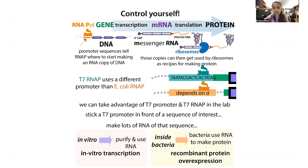T7 RNA polymerase is going to make RNA copies of DNA, so it's going to transcribe, but only in specific places — only when it has its promoter. It's going to use a different promoter sequence than the bacterial one. The promoter is the sequence that it recognizes and starts making RNA from.